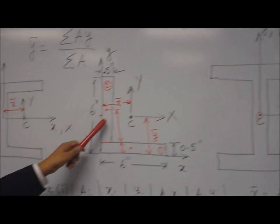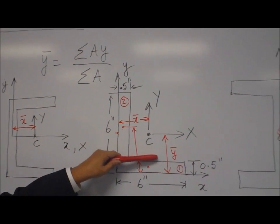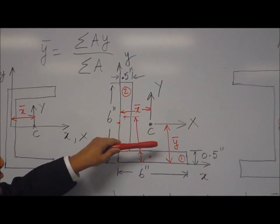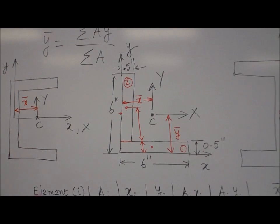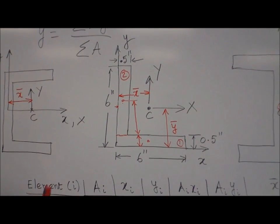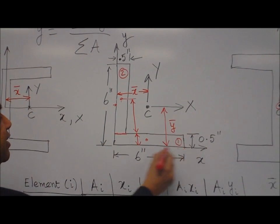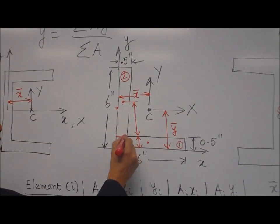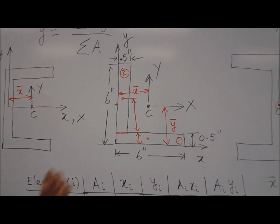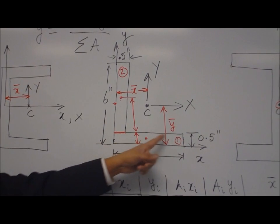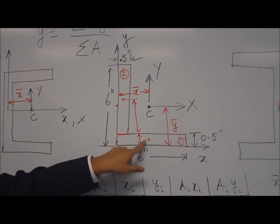Let us take the L-section worked example. Since it has no symmetry, let us find the centroidal distances x̄ and ȳ with respect to the reference axes x and y. Since it is an L-shape, we divide it into two simple rectangular elements — element 1 and element 2. Once we have simple rectangular shapes, we know the centroid of each, because each element has both x and y symmetry, so the midpoint is the centroid for that element.